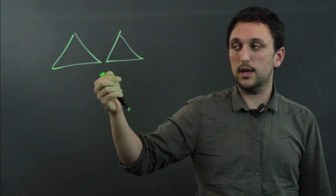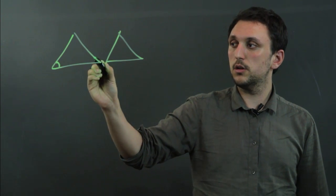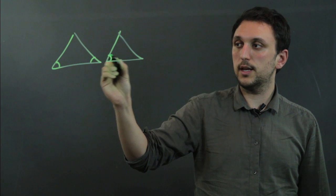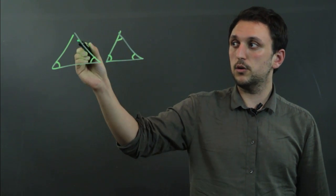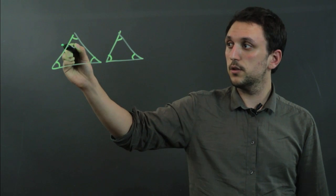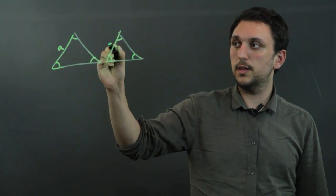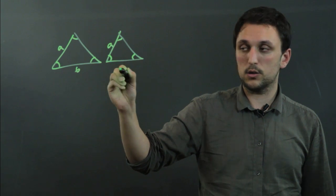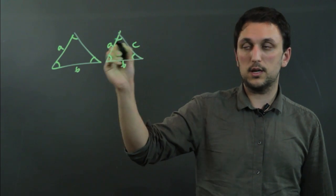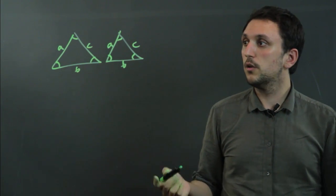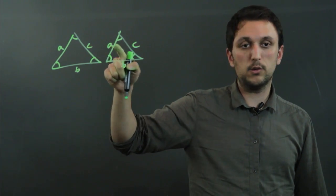So pretend these two are drawn to scale. Then this angle would equal this angle, this angle equals this angle, and this angle equals this angle. Plus this side would be this side, this side would be this side, and this side would be this side. So ABC is equal to ABC.